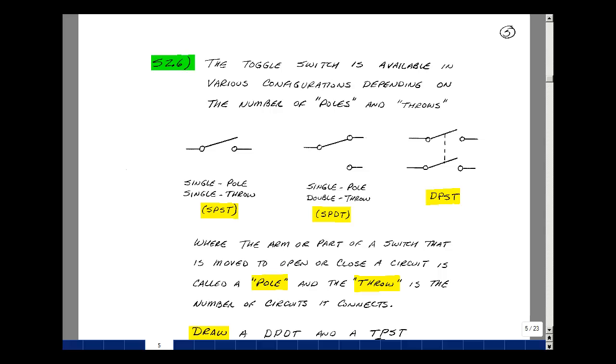What's shown here are different types of toggle switches, and the key terms with a switch are the number of pulls and number of throws.